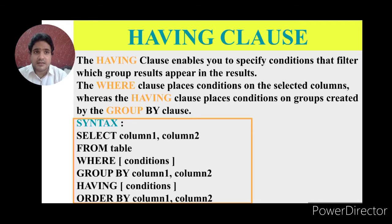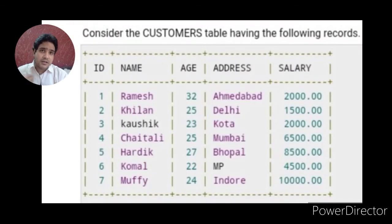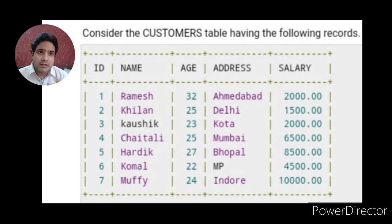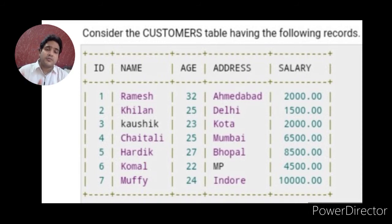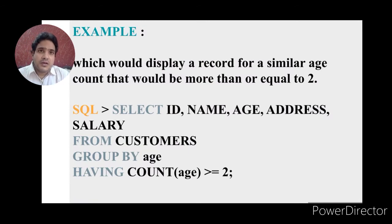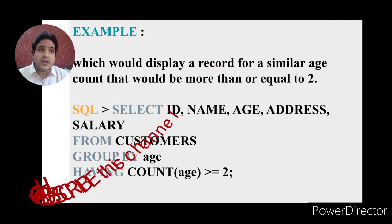Now let us take an example. We consider a table named customers, which we have seen in a previous part, having five attributes and seven tuples. The five attributes are: ID, Name, Age, Address, and Salary. The example is: display records for similar age where count is greater than or equal to two.